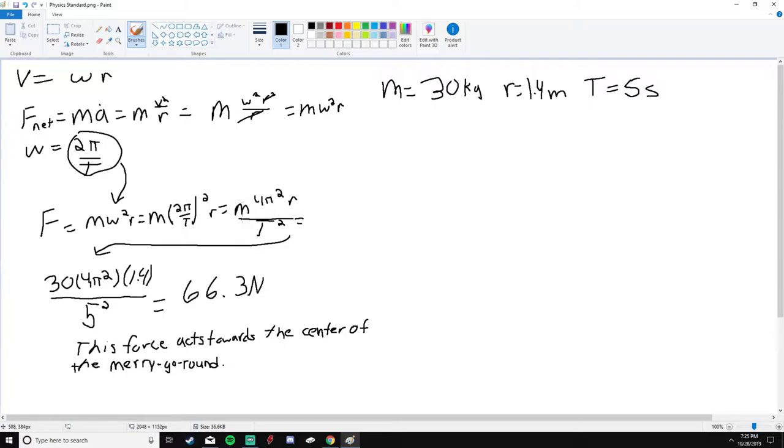Now we can plug in—we know mass, we know radius, and we know time. So we have a 30 kilogram child, we have 4π², our radius is 1.4 meters, and our time is 5 seconds. So square that on the bottom, and we get 66.3 newtons—that is the force acting on the child.